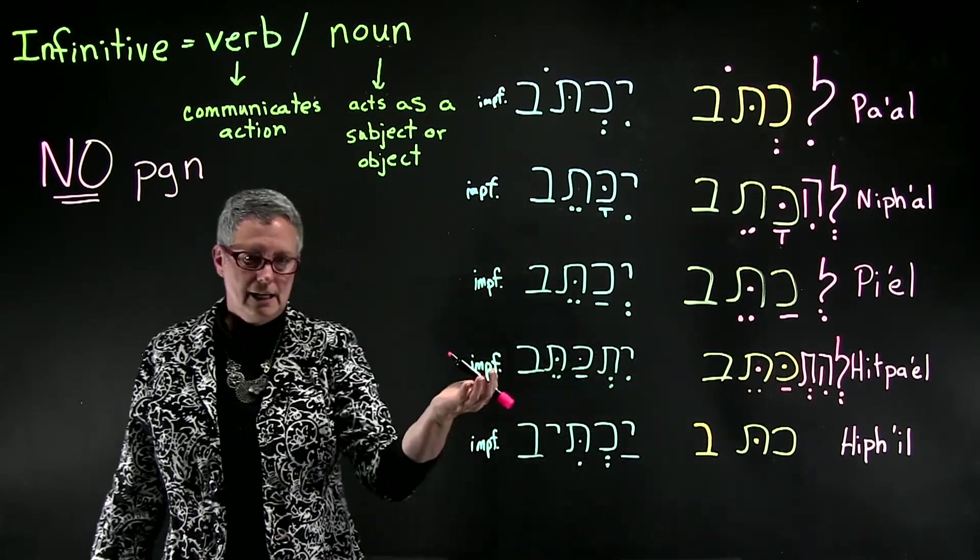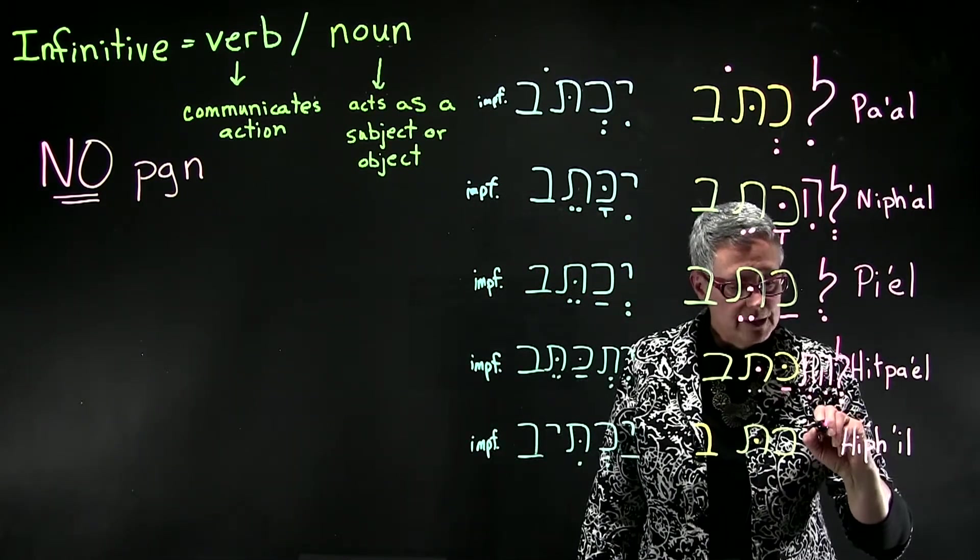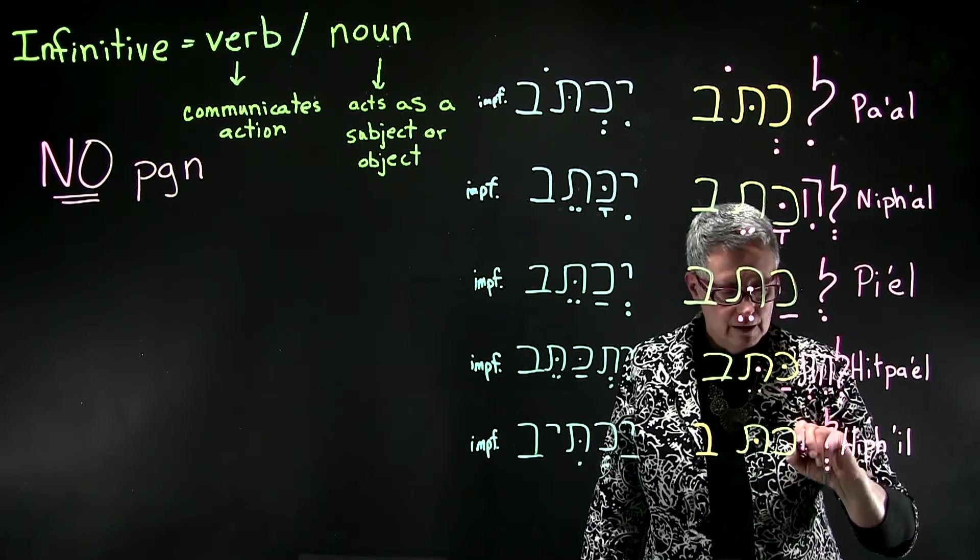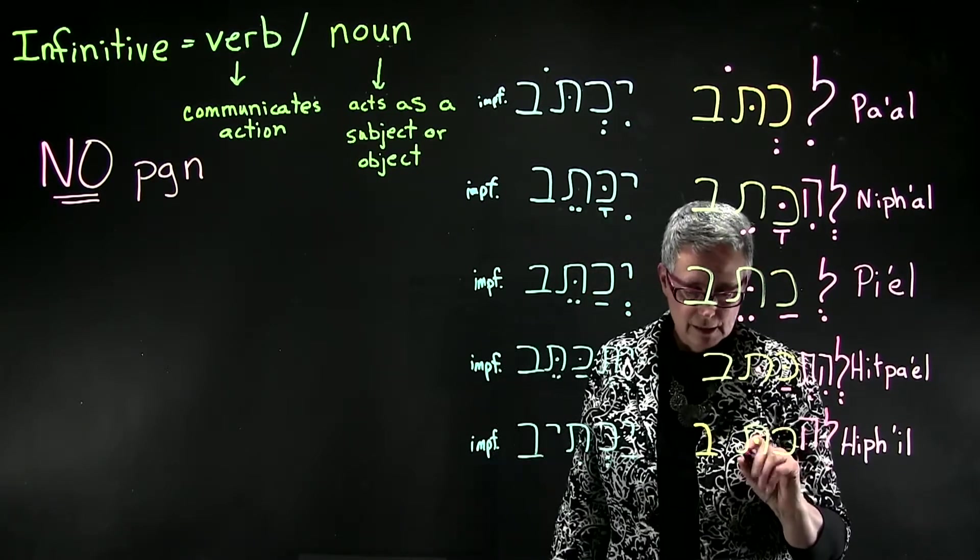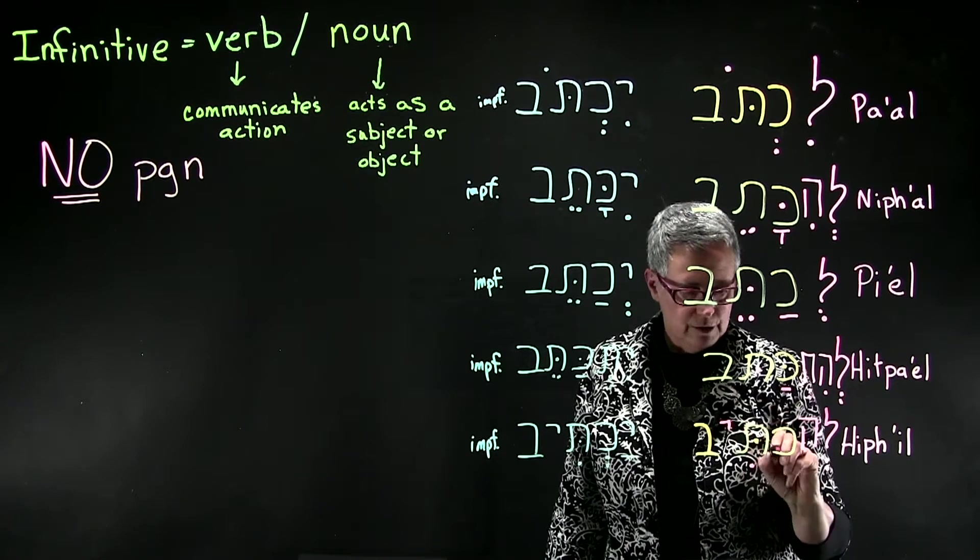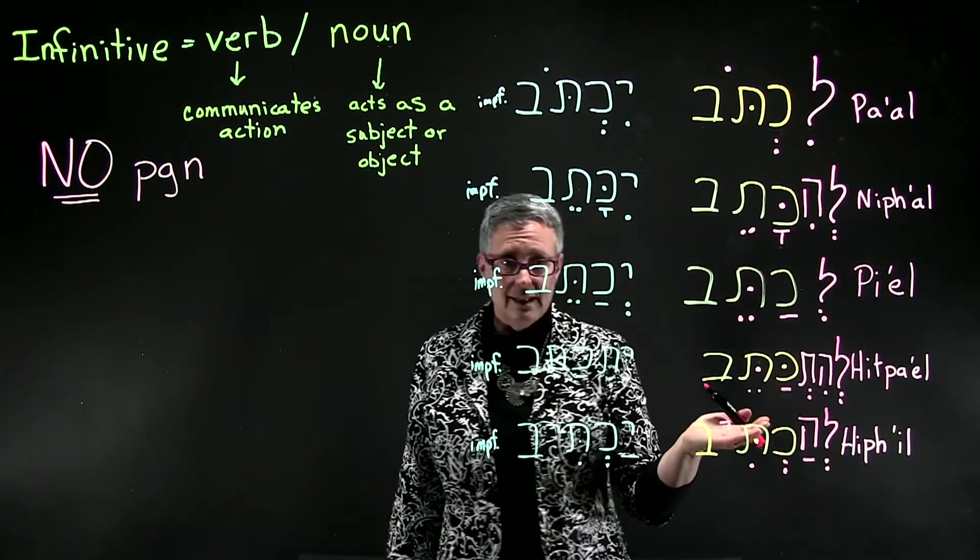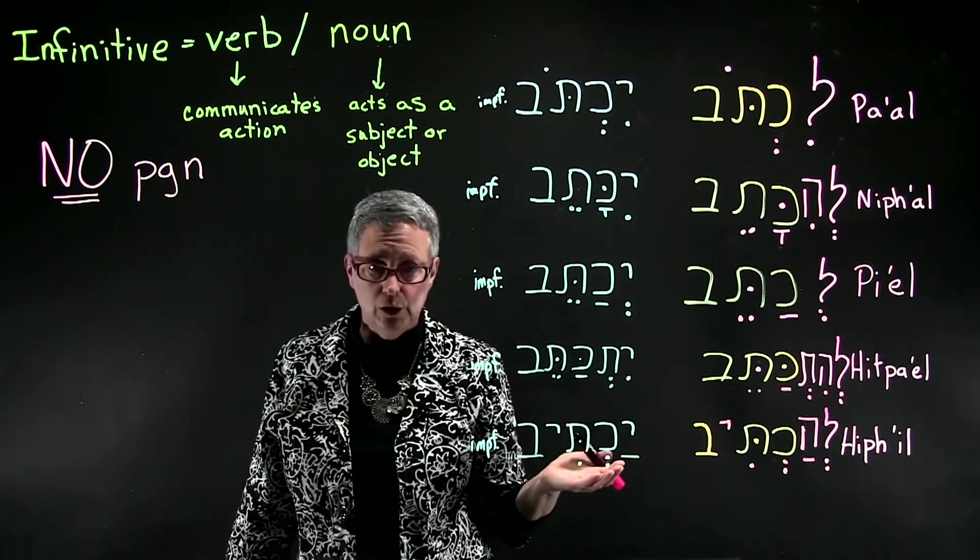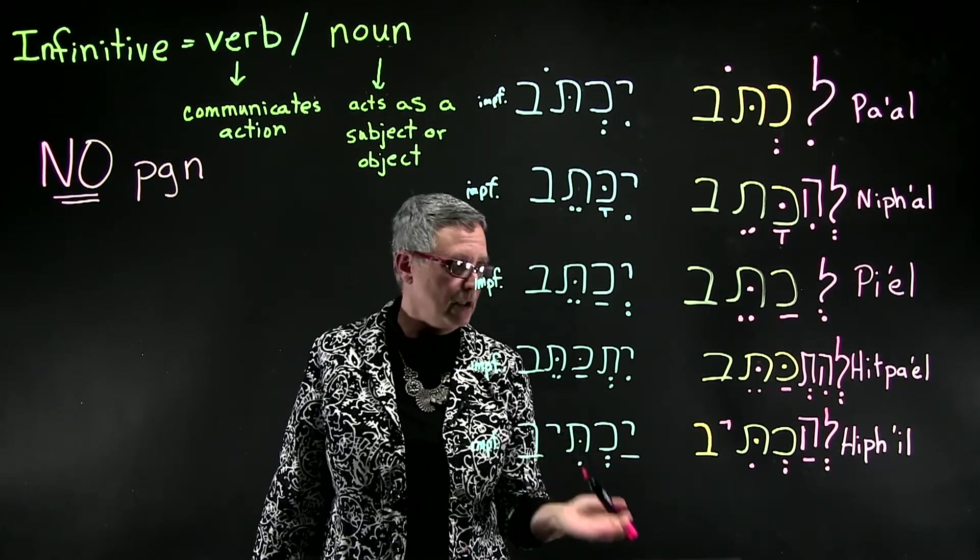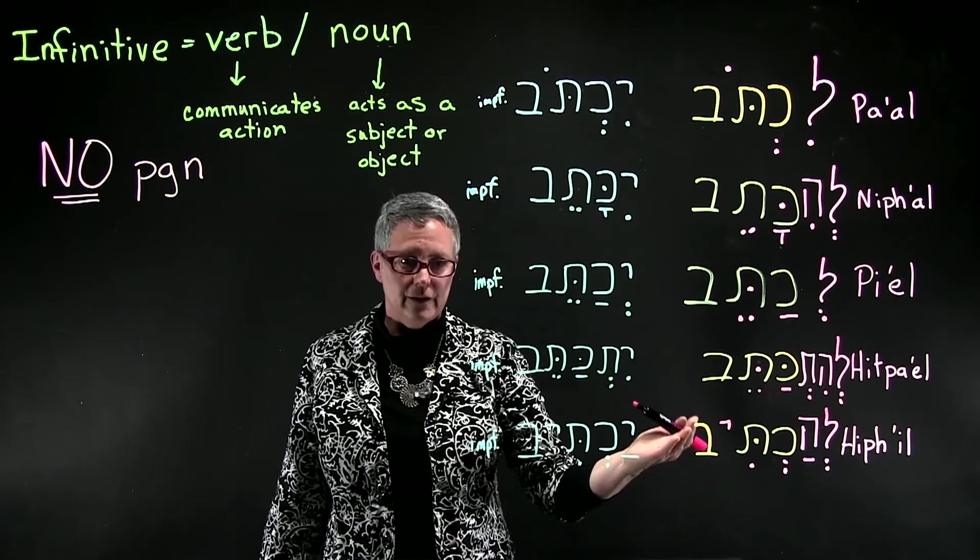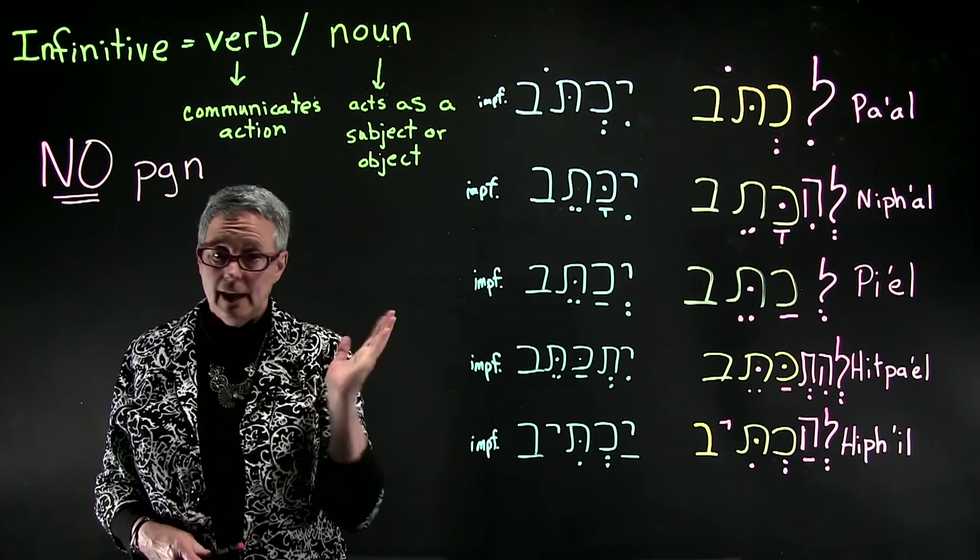And finally the hif'il. The preposition with a shva, the hey from the hif'il is still present, and you get the hirik yod. You still get to see the patah, which is a big clue for the imperfect as you remember, and for the participle as you remember. So lehaktiv—that is the form of the infinitive in the various stems.